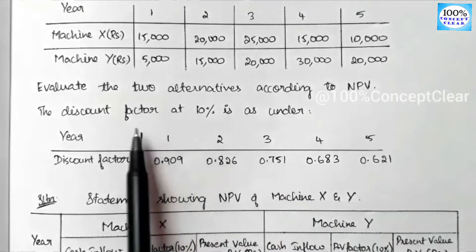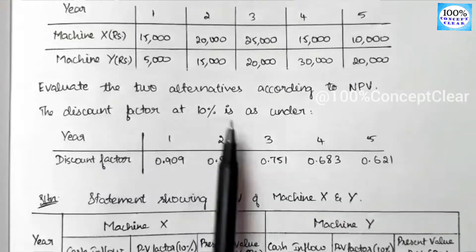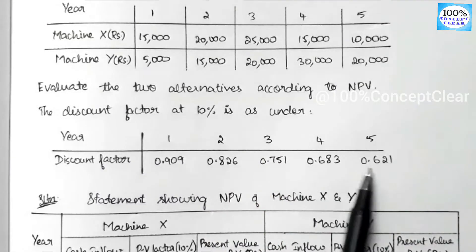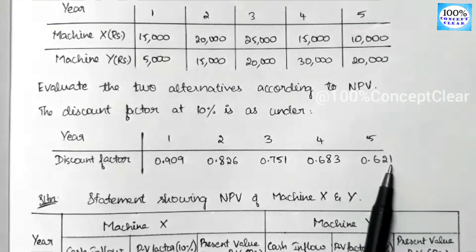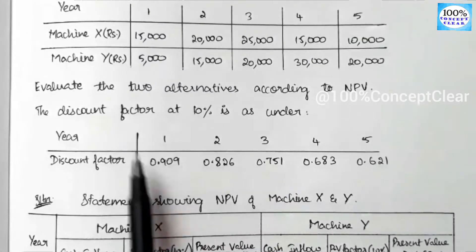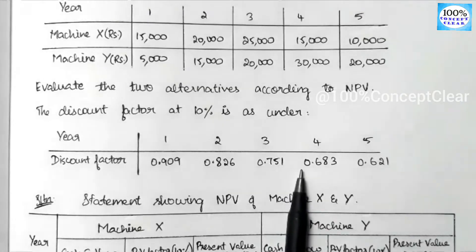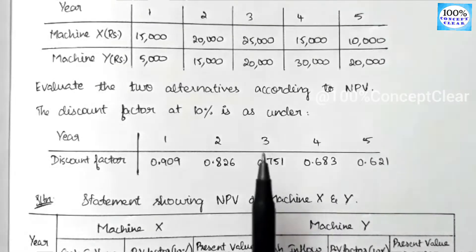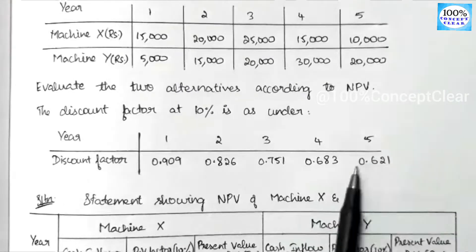Sometimes we have just a discounting factor table to use, and we apply those values in each year. If you want to know how to calculate PV factor for each year using the formula, we have already made a video — check the computation of PV factor in this playlist.